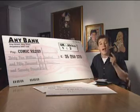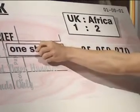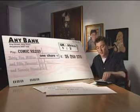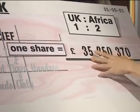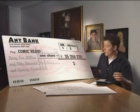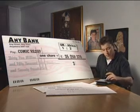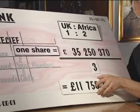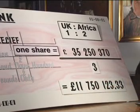Step two is to work out how much one share equals. What we need to do now is divide £35,250,370 by the number of parts or shares, which we've already worked out to be three. So, if I just use my calculator, £35,250,370 divided by three equals £11,750,123.33.